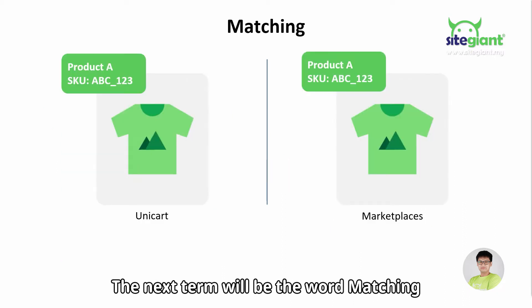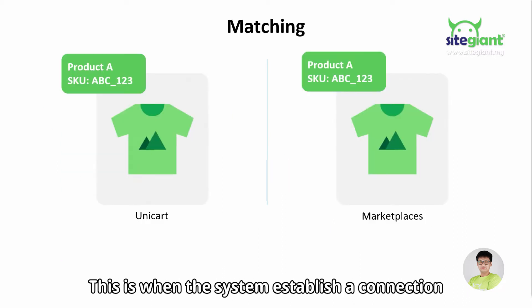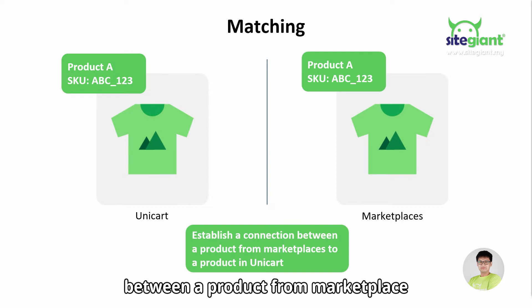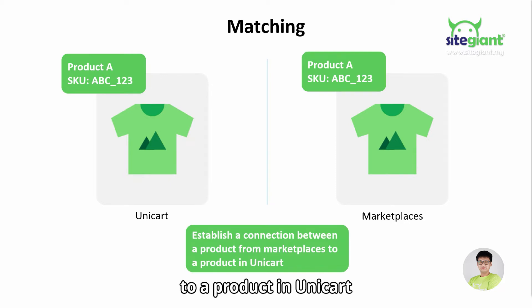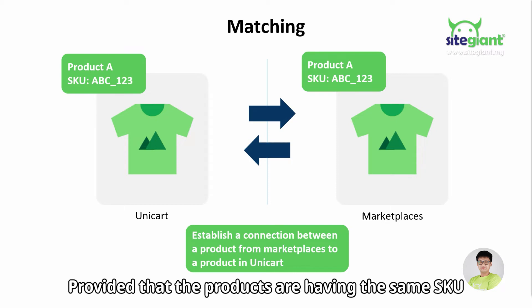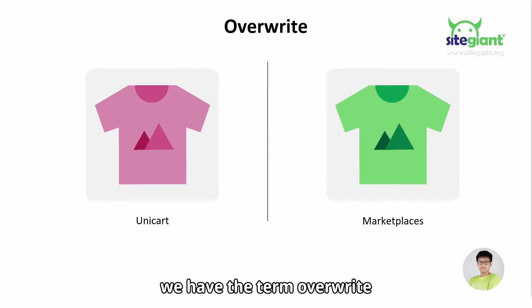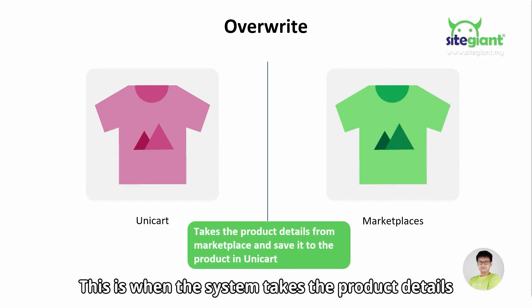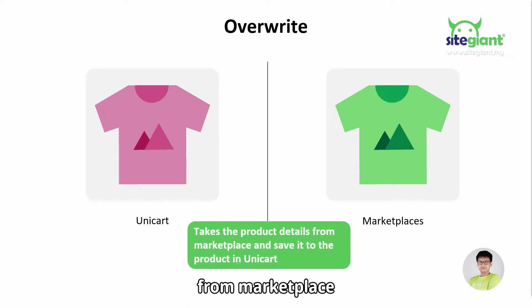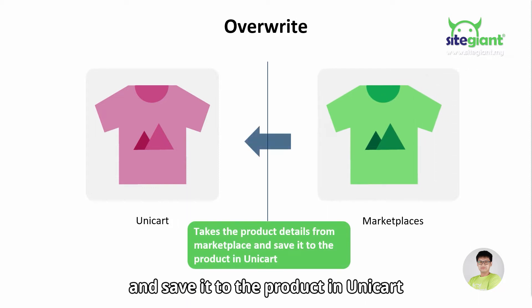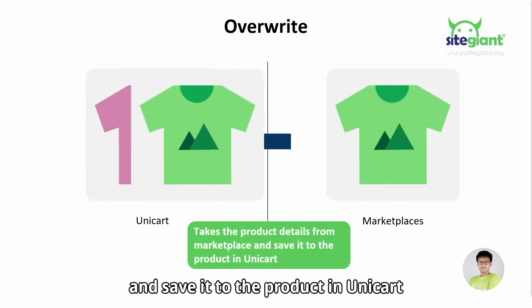The next term will be the word matching. This is when the system establishes a connection between a product from Marketplace to a product in Unicard, provided that the products are having the same SKU across all Marketplaces. Last but not least, we have the term override. This is when the system takes the product details from Marketplace and saves it to the product in Unicard.